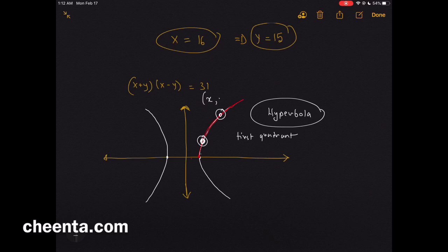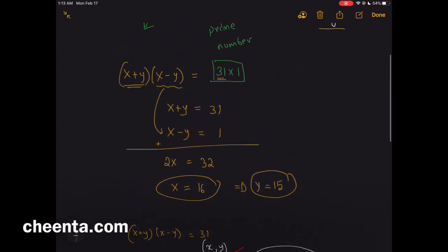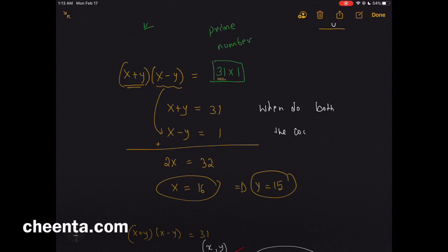What this problem is asking is: when do both the coordinates become integers? When are both the coordinates x and y, among these infinitely many points, integers?